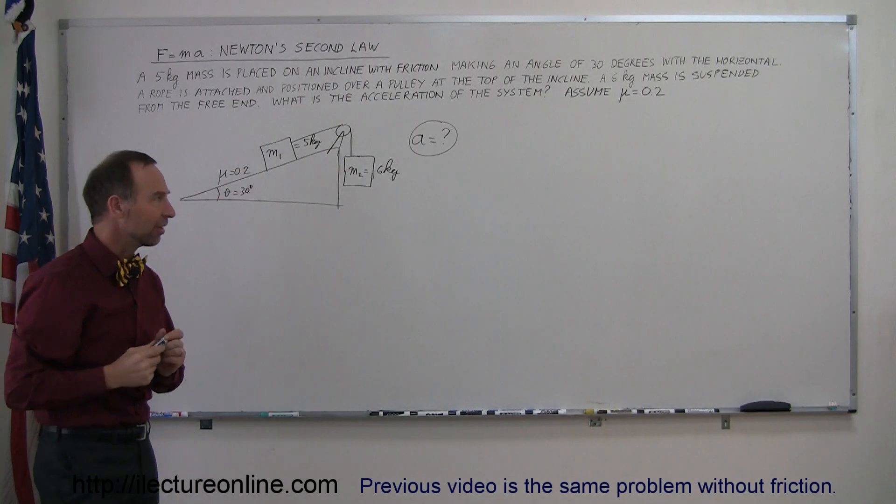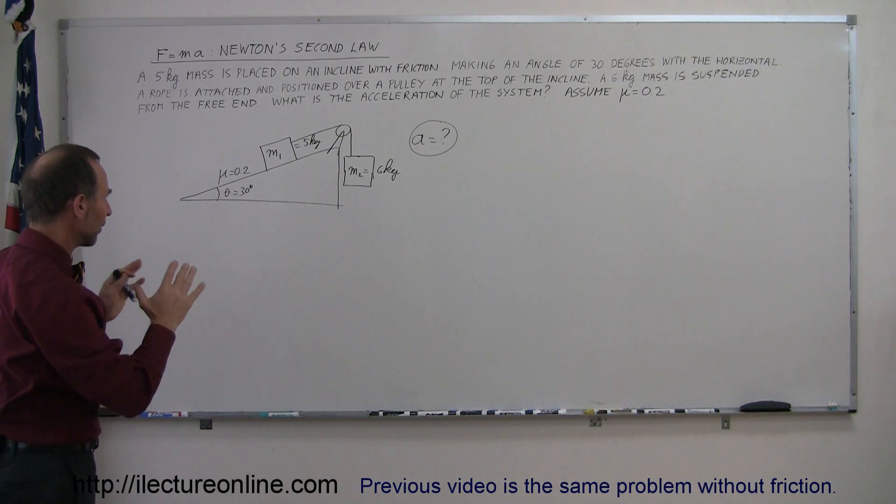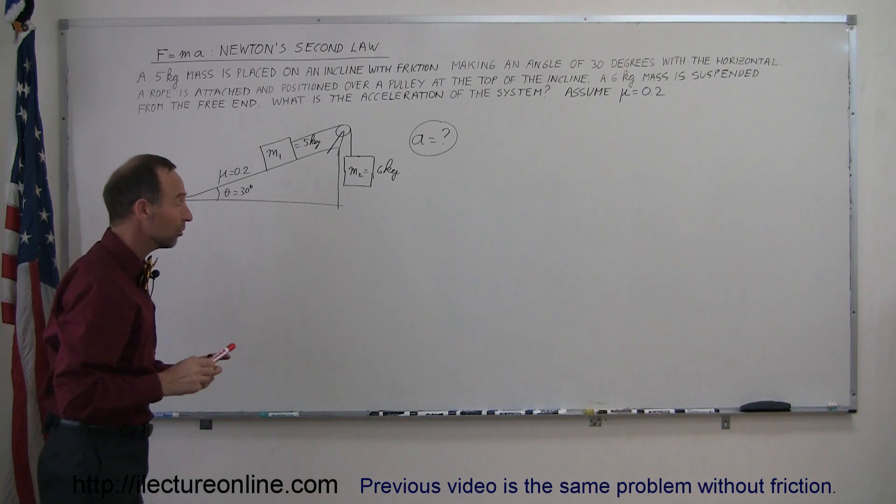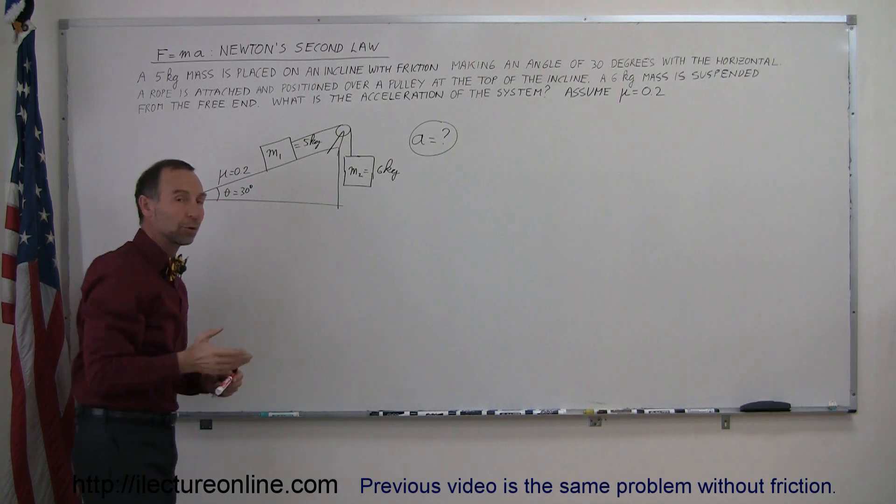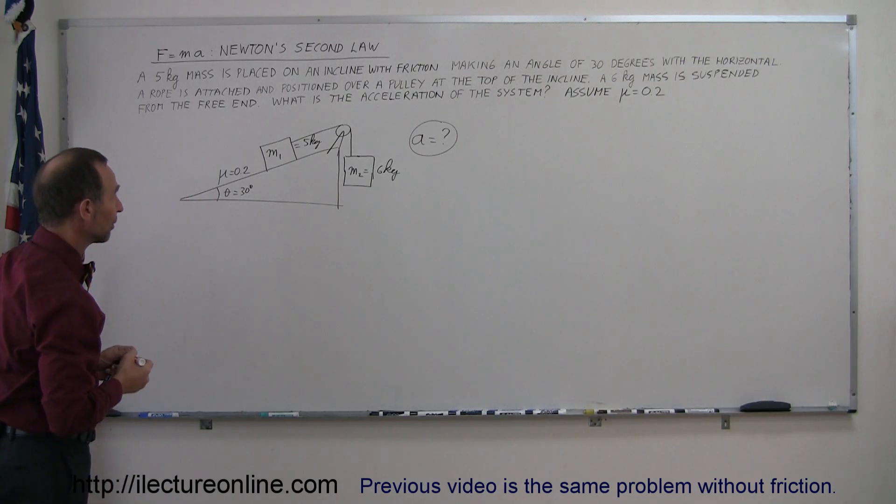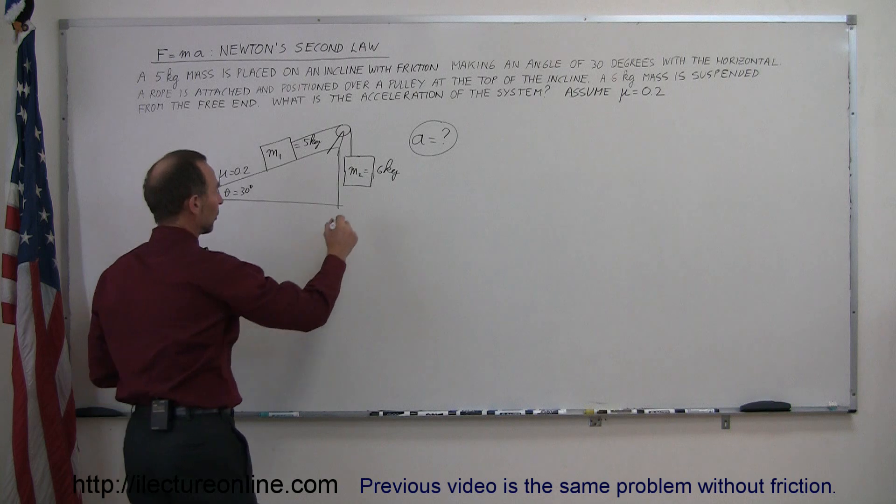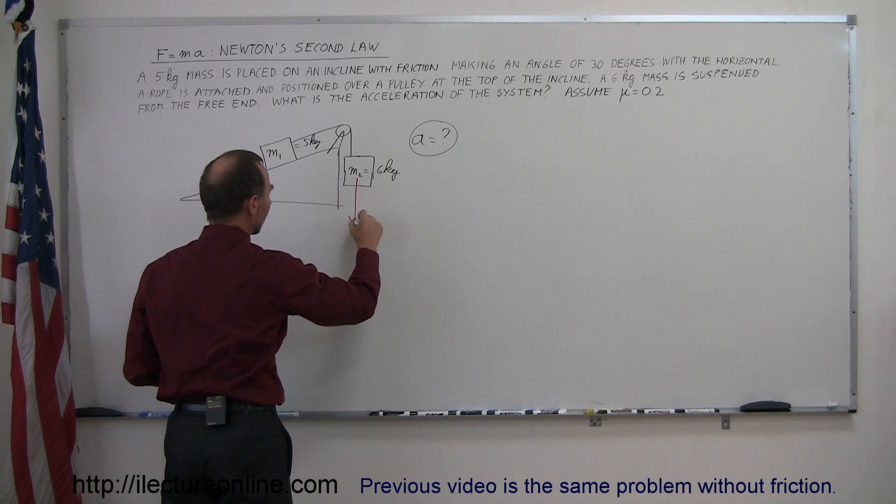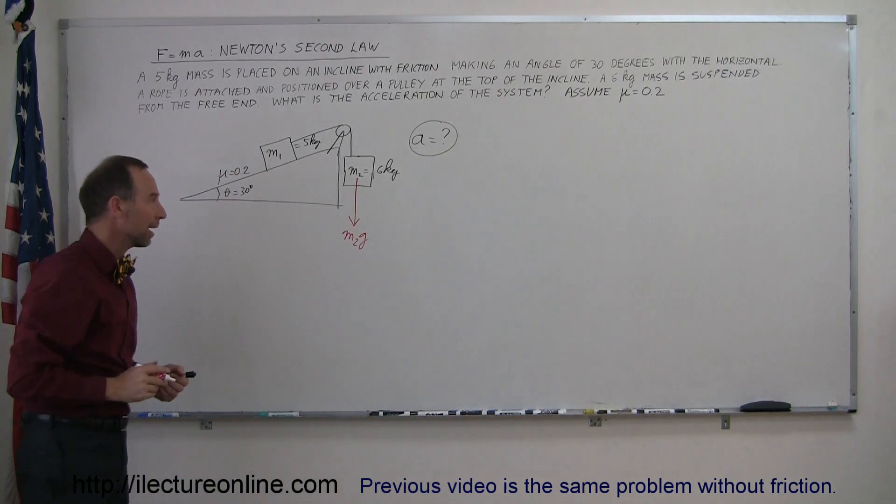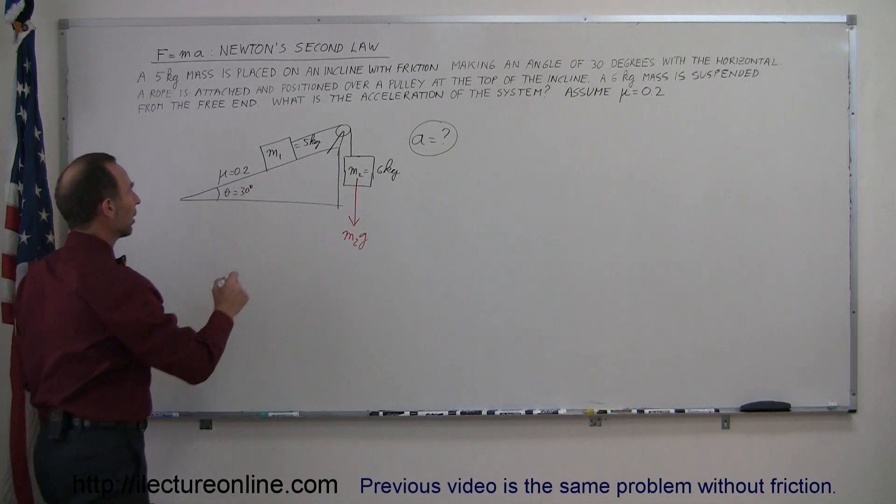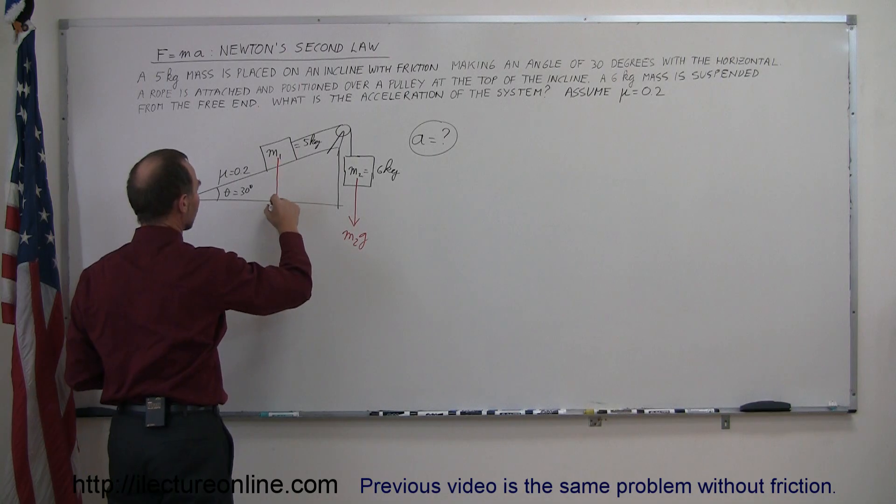We'll work it out the exact same way. We establish all the forces acting on the system that are from external sources. We don't worry about the tension inside the system, although we can calculate that later after we figure out the acceleration. What are some of the forces? Well we have the weight of mass two, m2g caused by gravity, straight down. We have the weight caused by m1, which is also straight down, caused by gravity, m1g.